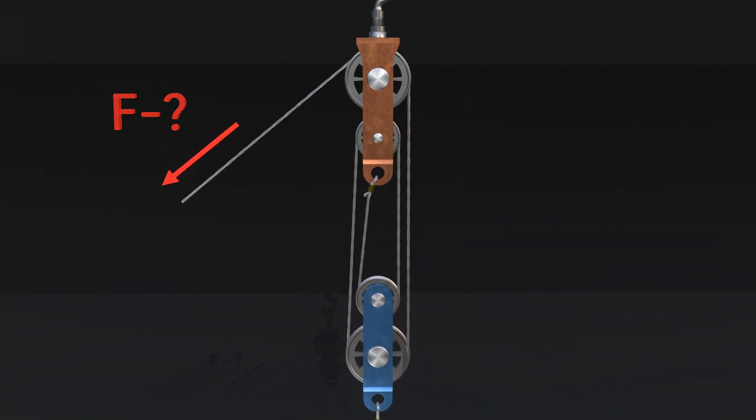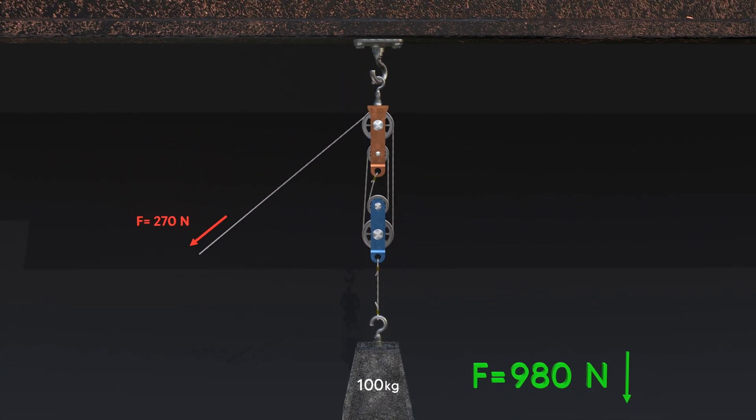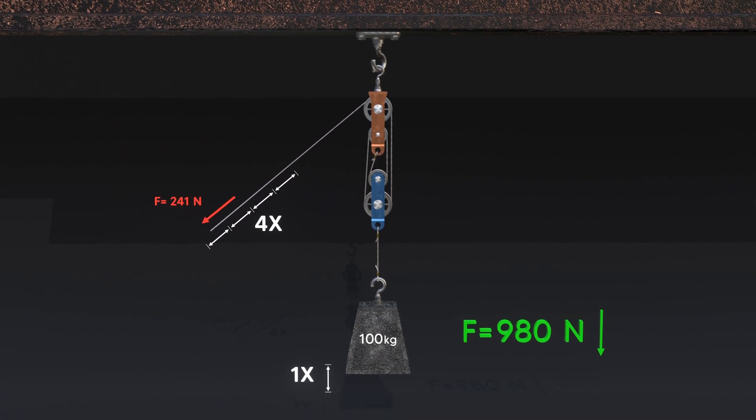This means that to lift the load, we will need to apply a force slightly greater than one fourth of its weight. This way, we get a fourfold advantage in strength and therefore a fourfold loss in path length.